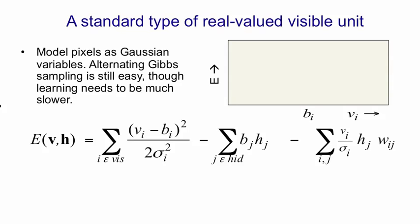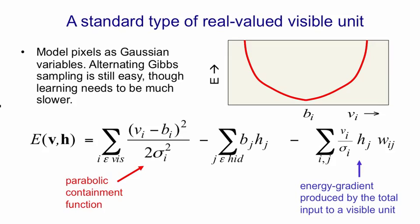The equation looks like this. The first term on the right-hand side is a kind of parabolic containment function that stops things blowing up. The term in that sum contributed by the i-th visible unit is parabolic in shape. It's a parabola with its minimum at the bias of the i-th unit. As the i-th unit departs from that value, we add energy quadratically, which tries to keep the i-th visible unit close to bi. The interactive term between the visible and the hidden units looks like this. If you differentiate that with respect to vi, you can see that you get a constant.